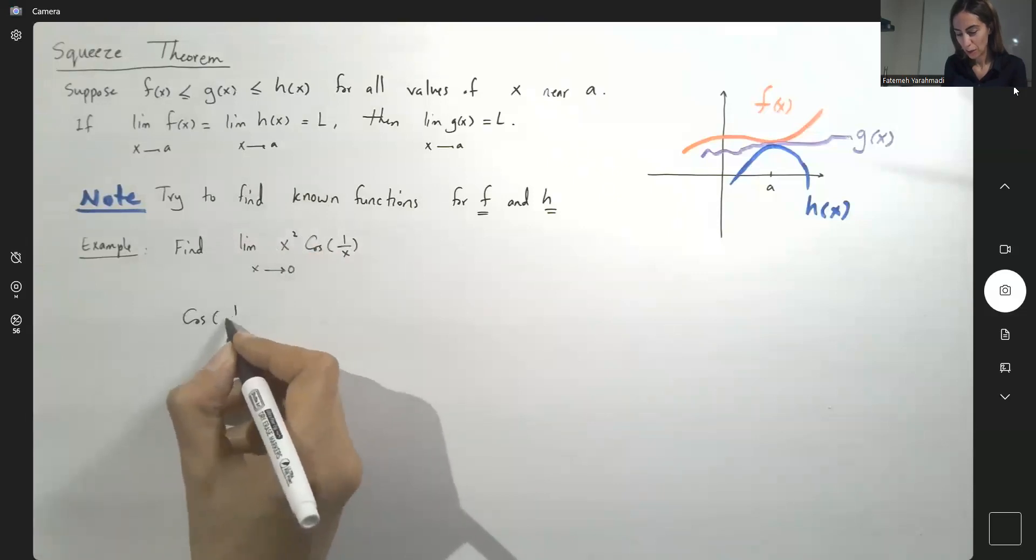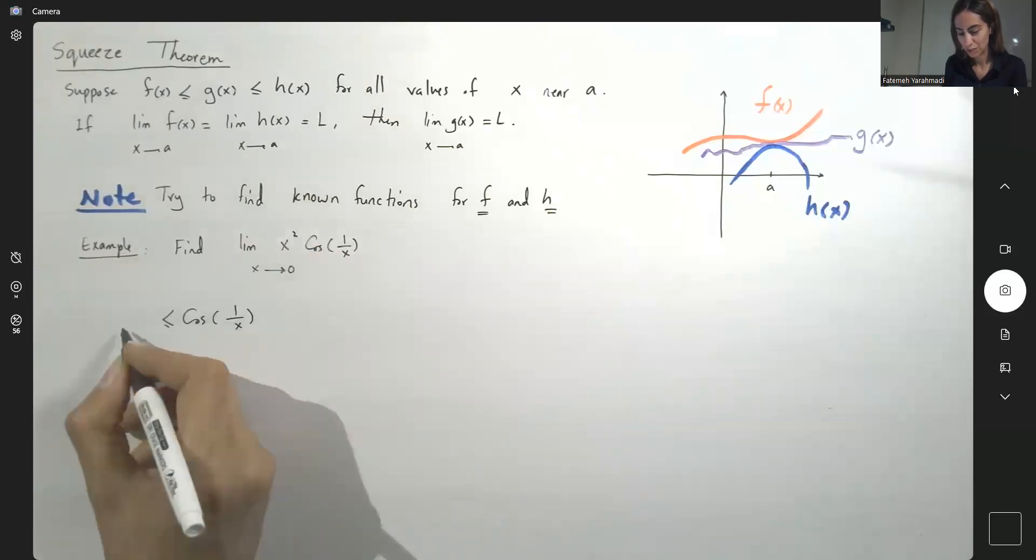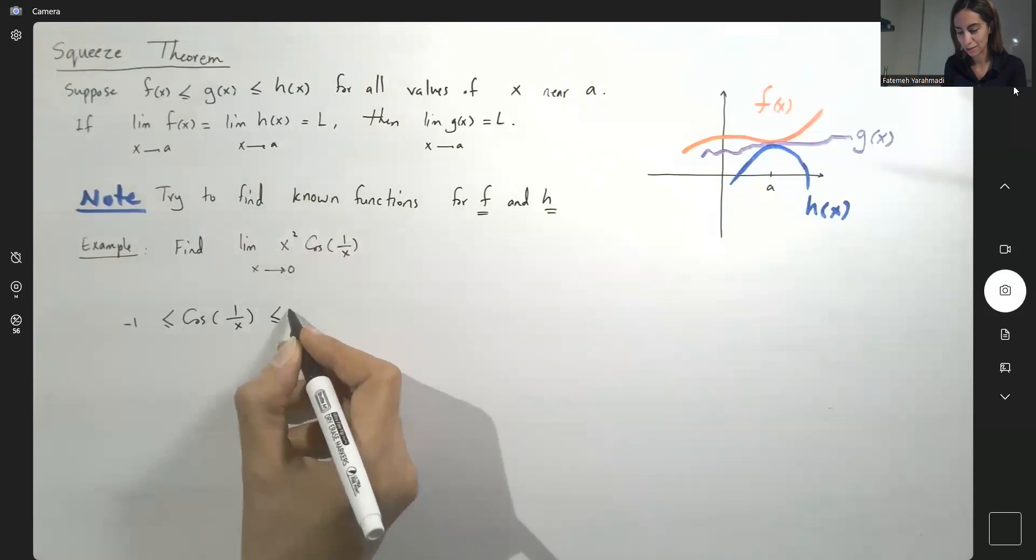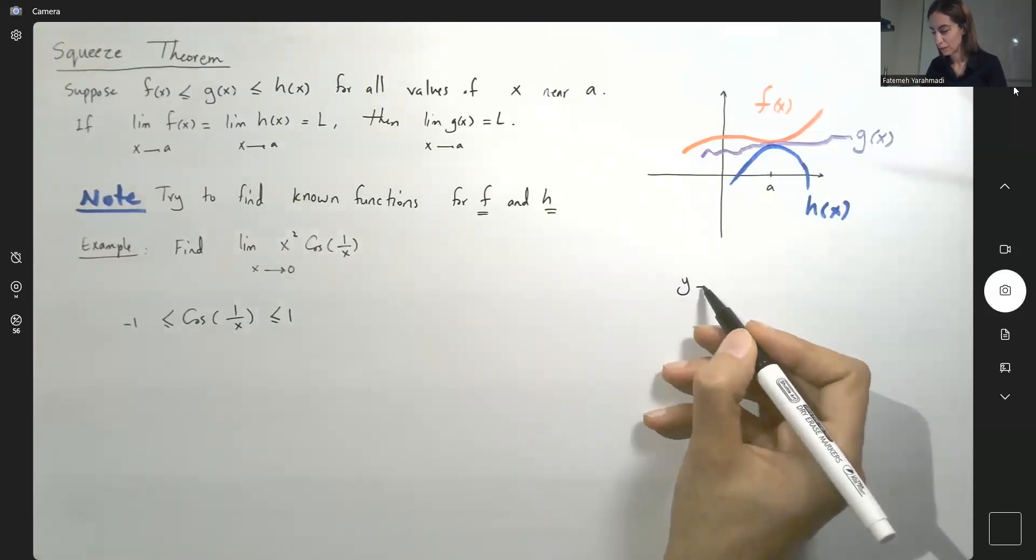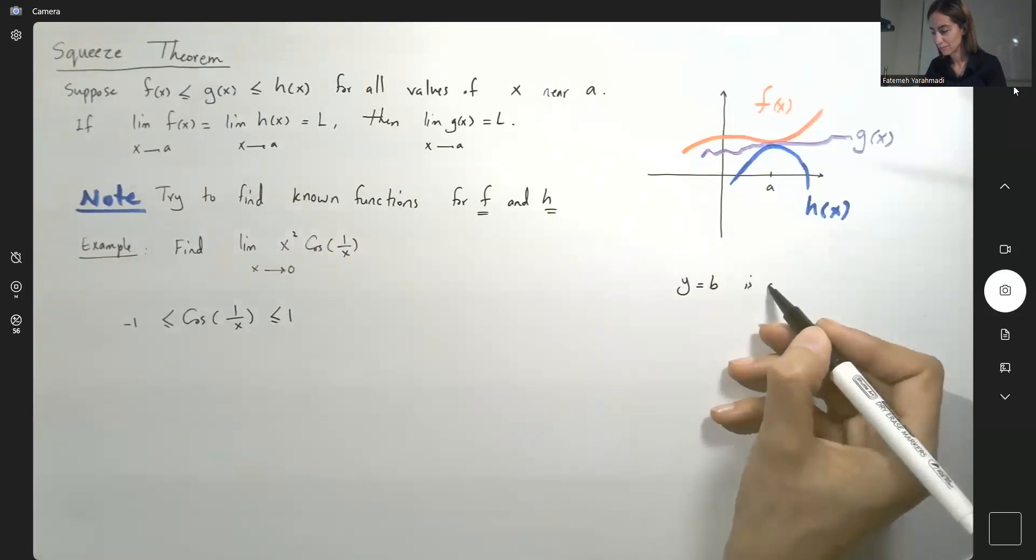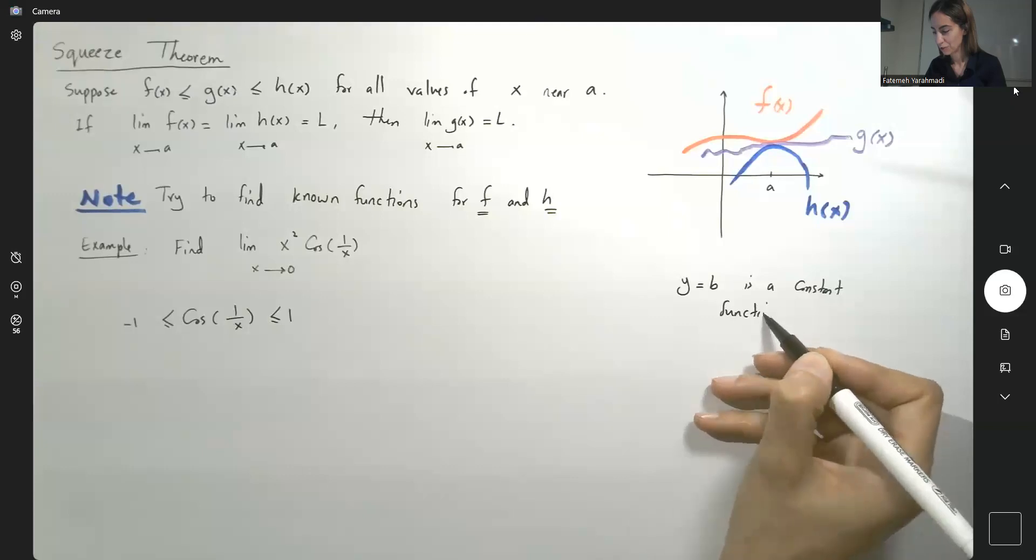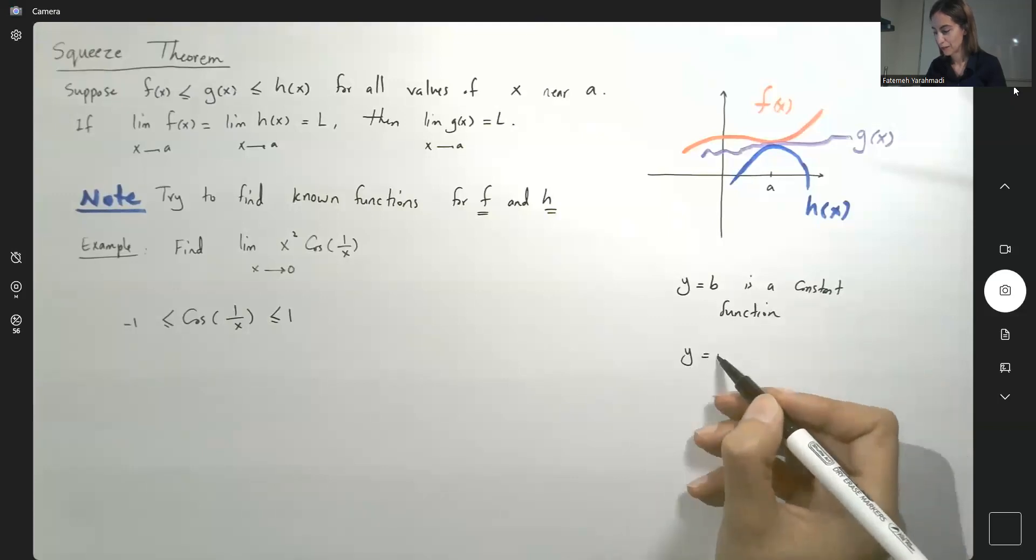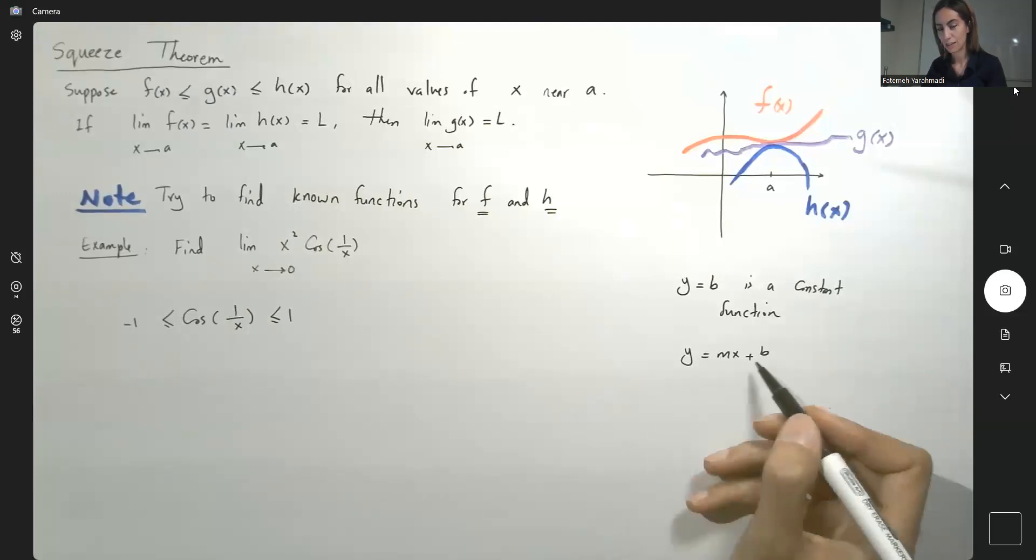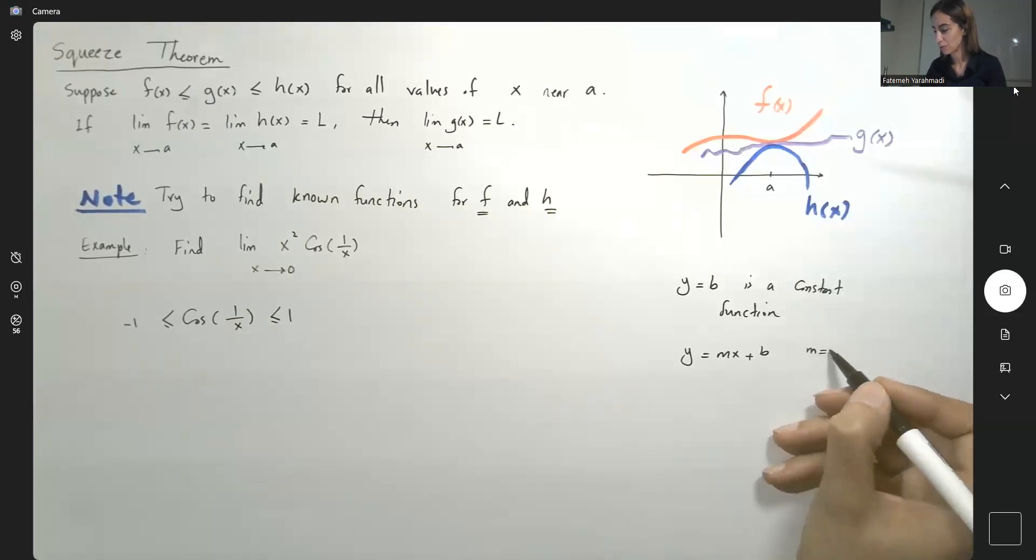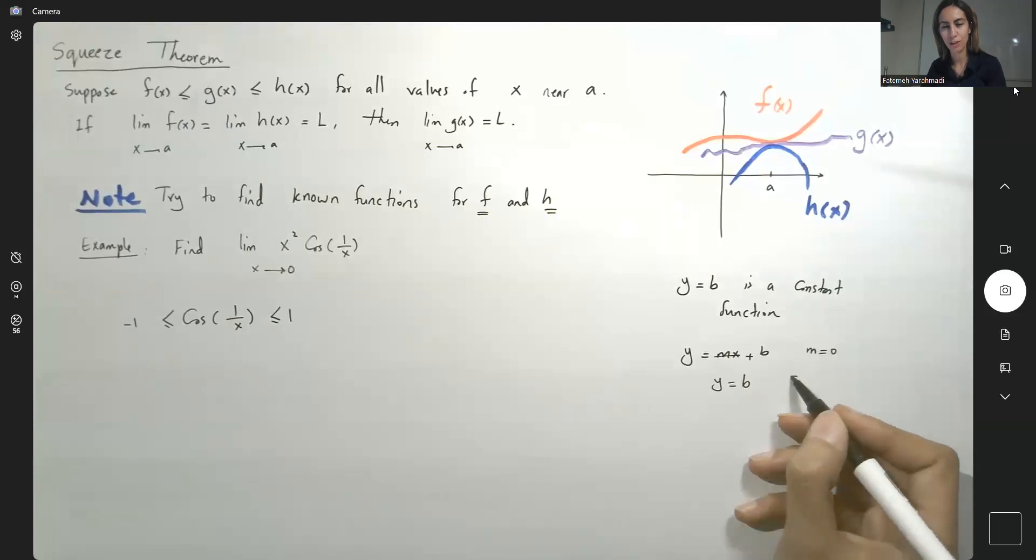You can squeeze cosine function in between two constant functions. y equals b is a constant function. Remember that if you have a linear function and the slope is equal to 0, then y becomes b, which is a flat function.